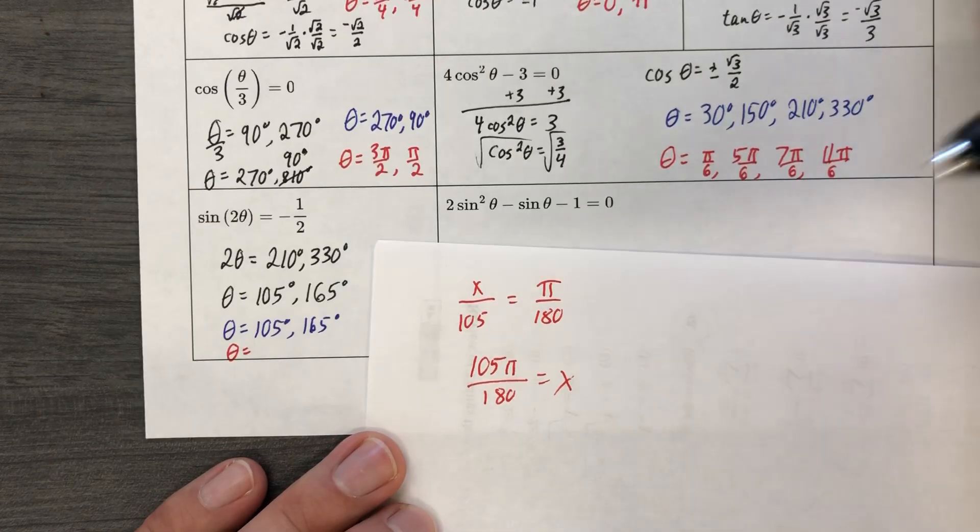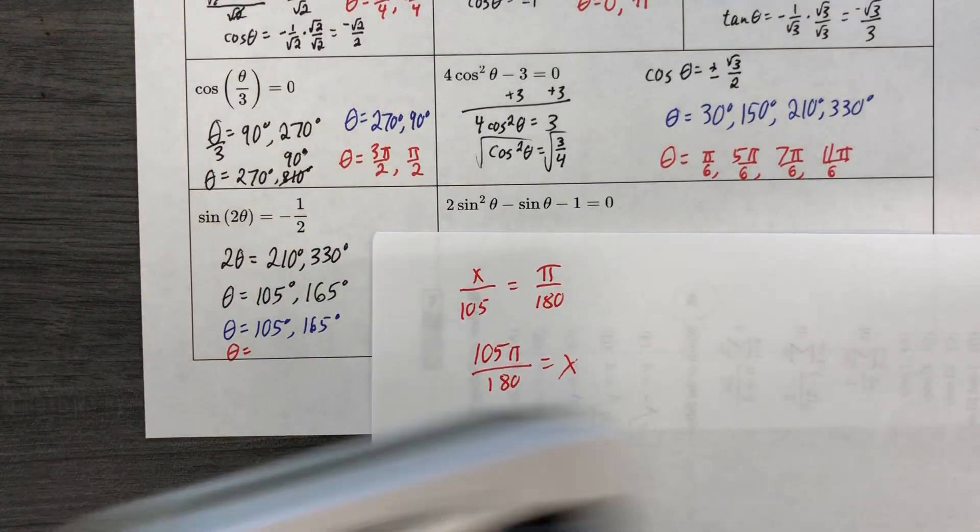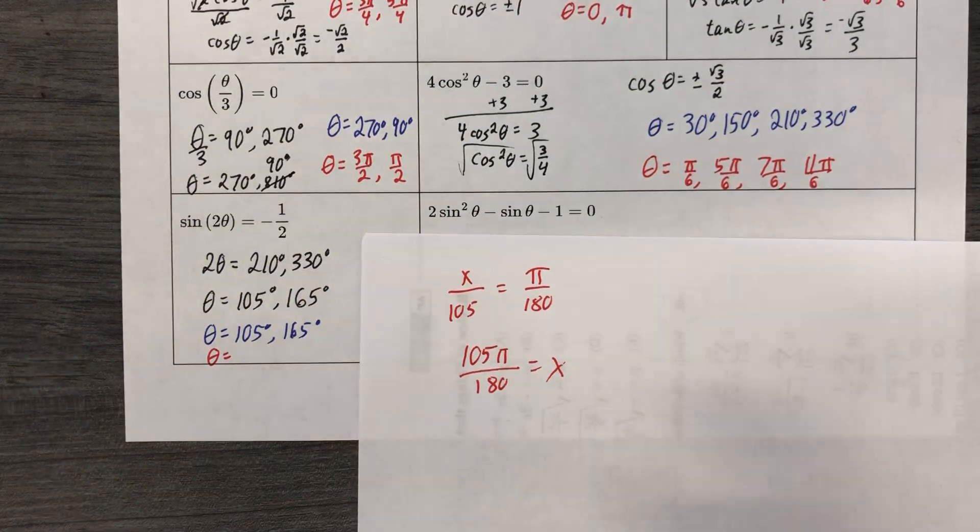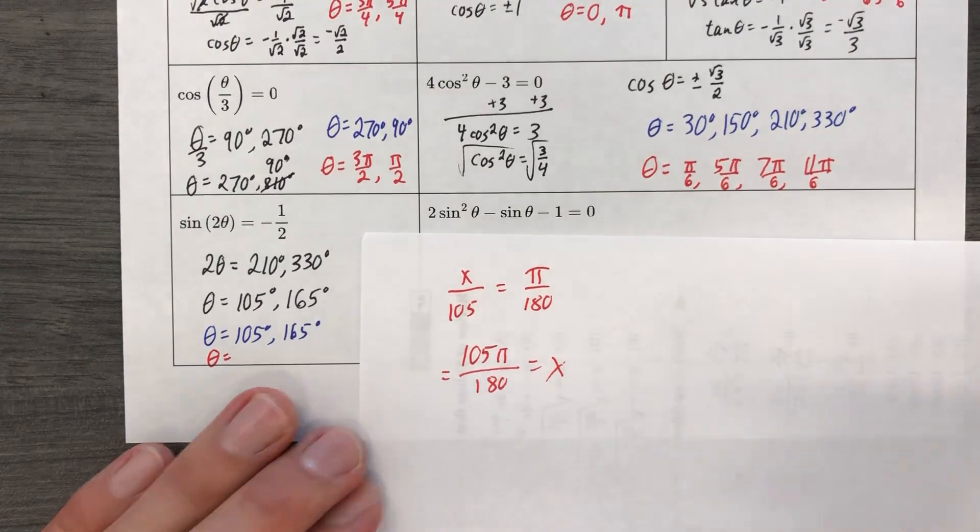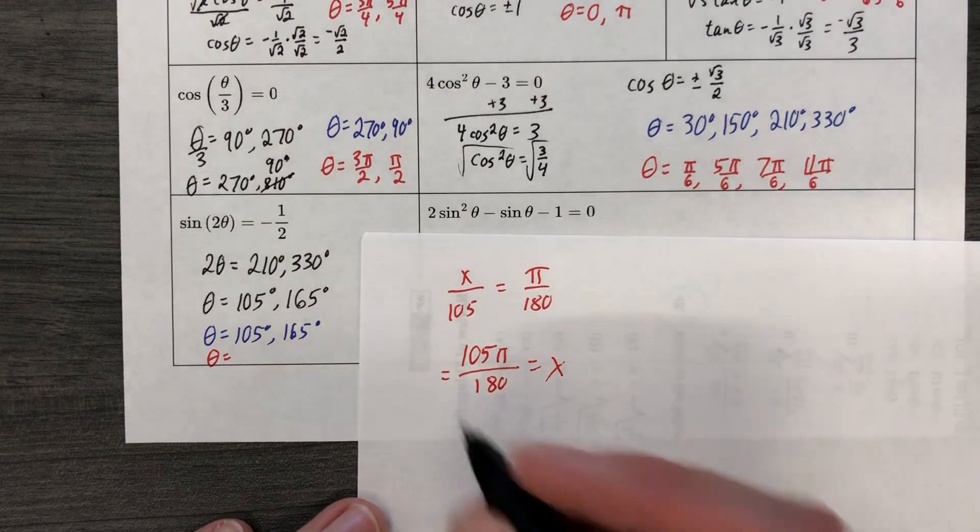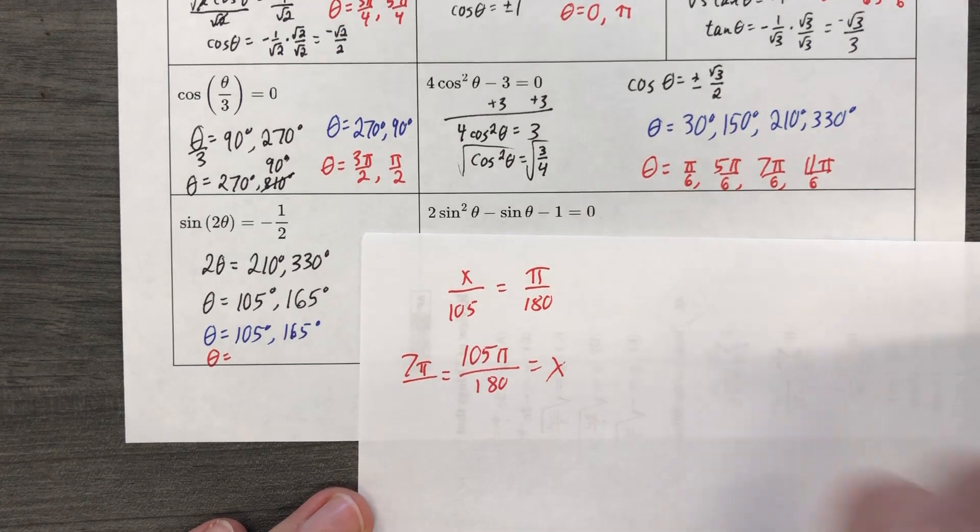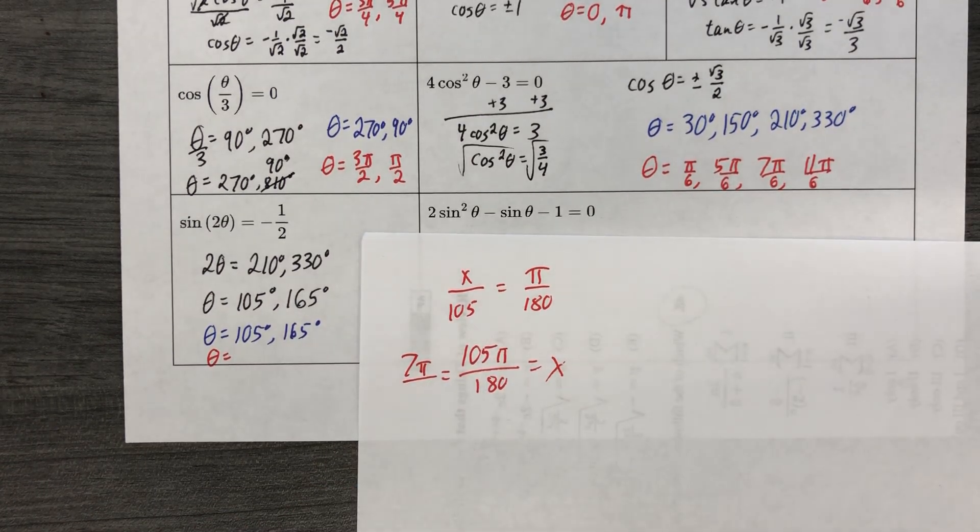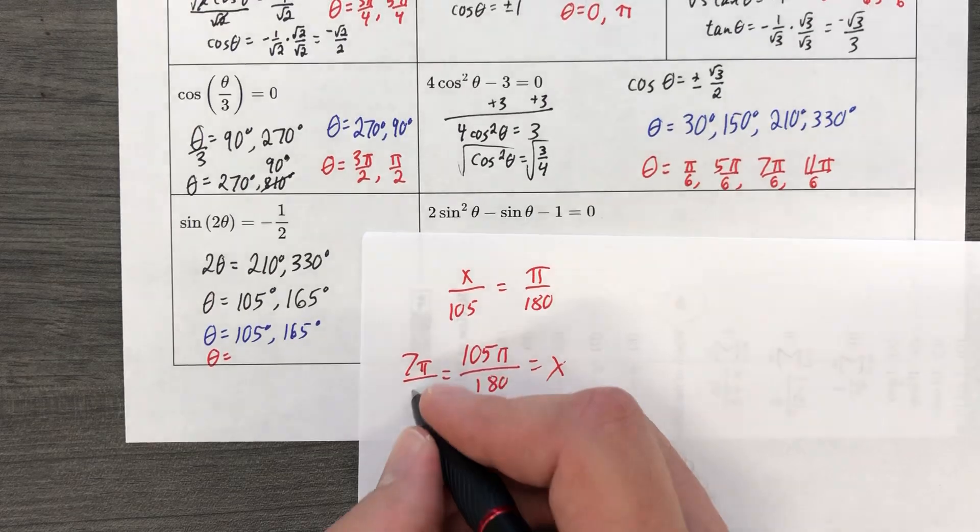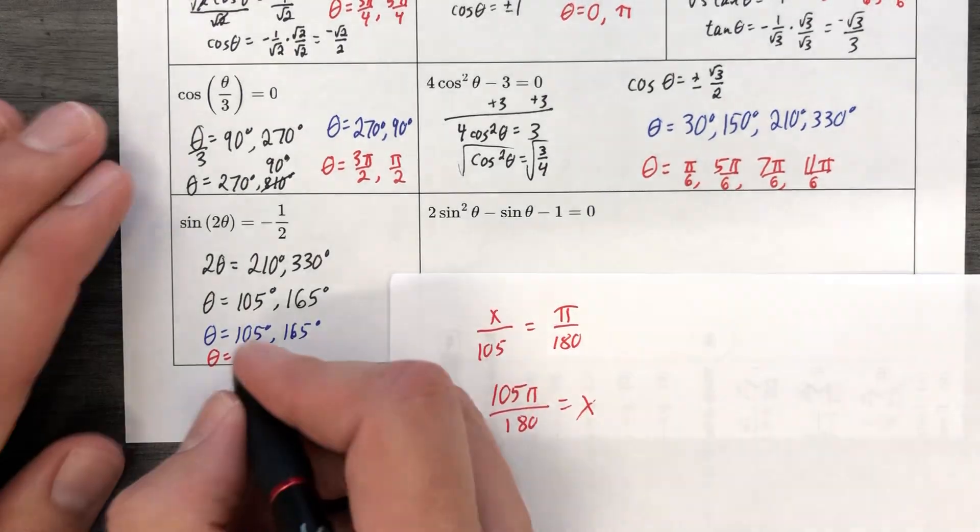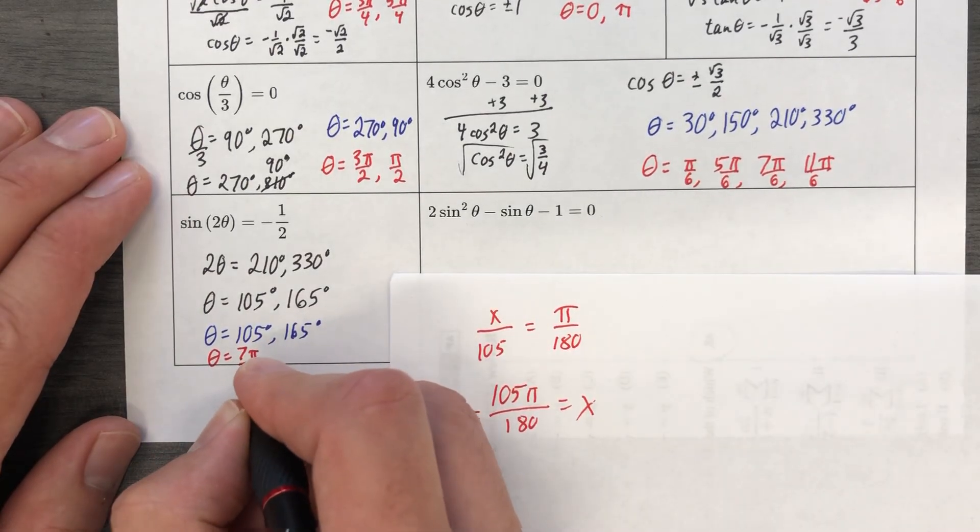So when we reduce that fraction, we're going to say, well, 105 or 180, let's see. 5 goes into that numerator. Wait a minute. 15 goes into that numerator and it goes in seven times and 15 goes into that denominator and it goes in 12 times. 7 pi over 12. 7 pi over 12.